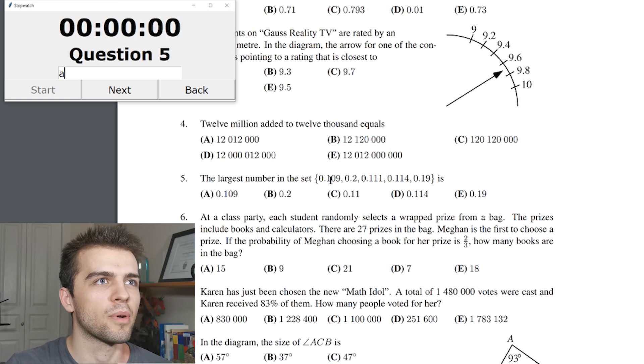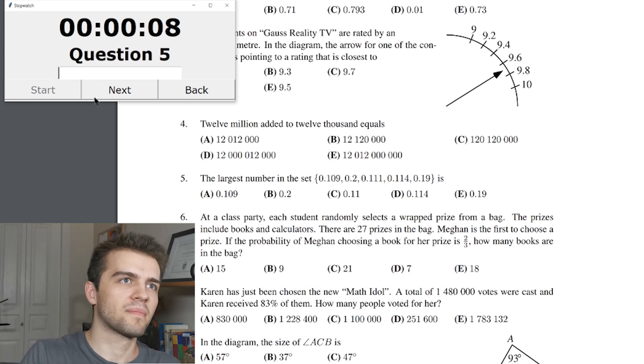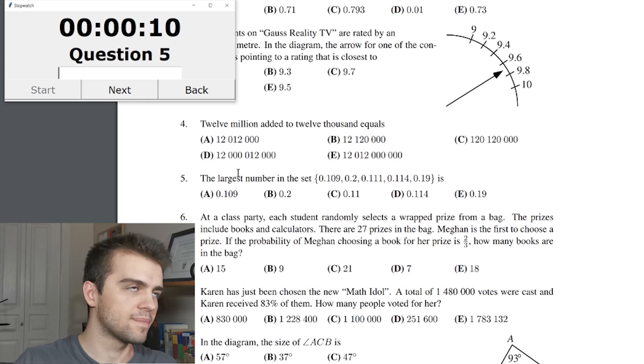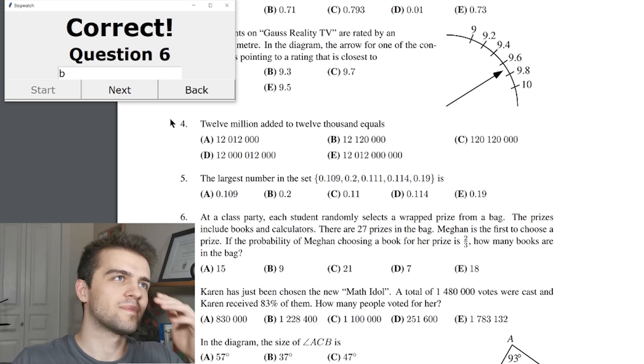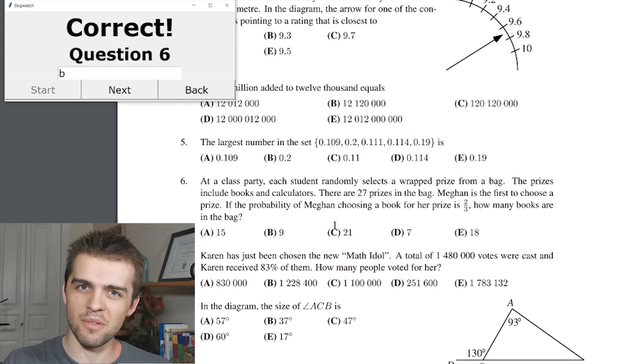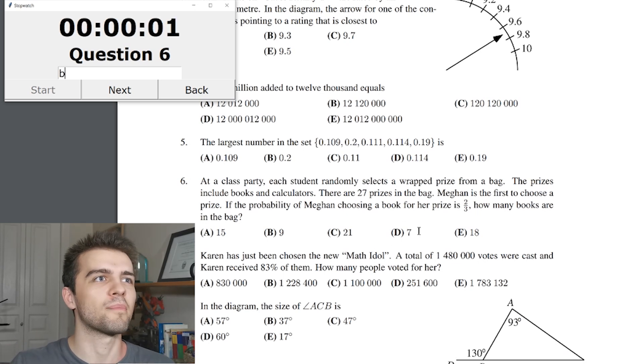Five, the largest number in the set, 0.109, 0.2, 0.111, 0.114, and 0.19. Well, it's got to be 0.2. And that is B. Alright, alright. These are the easy ones. I got to be, you know, not working up a sweat here.